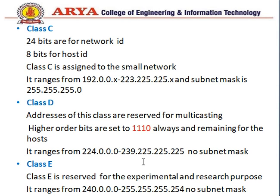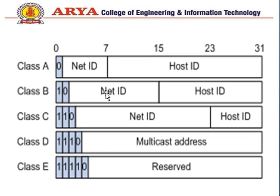These are the 5 main classes of the IP address. The diagram shows which bits are already reserved in the IP address. In Class A, the first bit is reserved as 0, then the remaining 7 bits can be filled with the network ID, and the remaining bits with the host ID. In Class B, the first two fixed bits are 10, shown in the blue portion.